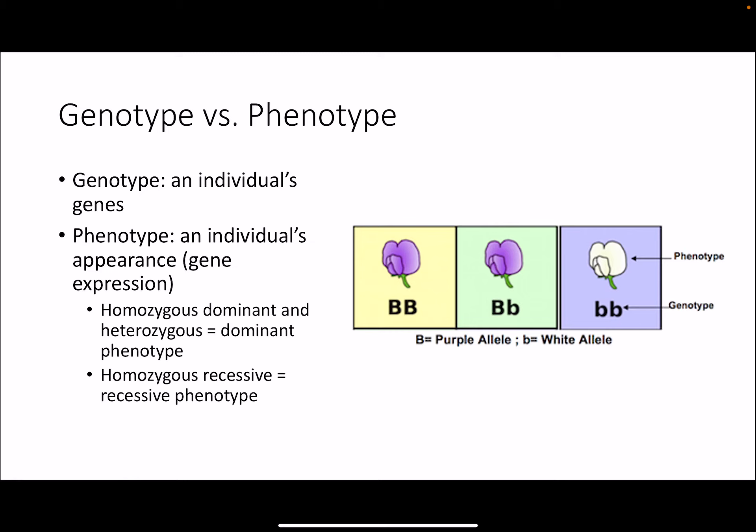This is also known as a genotype, basically just an individual's genes. The phenotype is the word we use to describe an individual's appearance — the traits they're outwardly showing or their gene expression. You can't necessarily tell an individual's genotype just based on the phenotype, because since the dominant allele suppresses expression of a recessive allele, both homozygous dominant individuals and heterozygous individuals will show that dominant phenotype. In the example on the right, the purple allele is dominant over the white allele, so individuals with two purple alleles or a purple and a white allele will both have purple color, whereas only the individual with two white alleles will show white color.